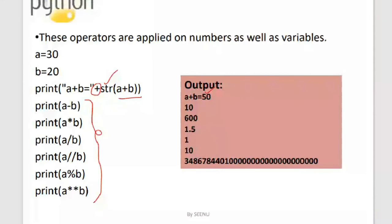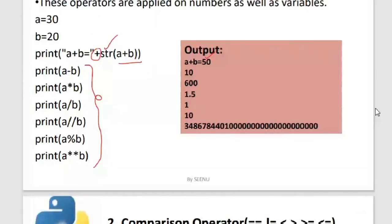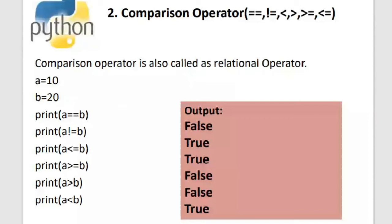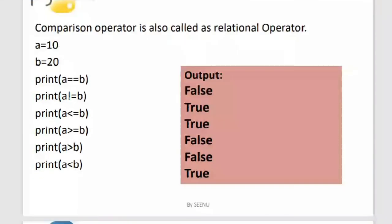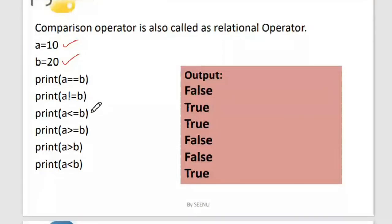The next operators are comparison operators: equal to, not equal to, less than, greater than, greater than or equal to, and less than or equal to. These operators return a Boolean value. We've taken a equal to 10 and b equal to 20. Checking a == b gives false since 10 is not equal to 20, and a != b gives true.